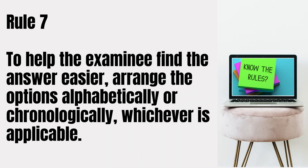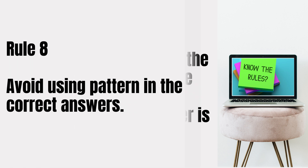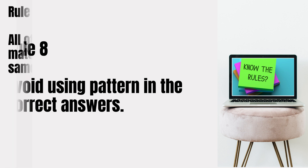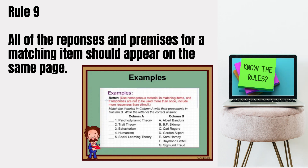Rule number seven: to help the examinee find the answer easier, arrange the options alphabetically or chronologically if in date or time, whichever is applicable. Rule number eight: avoid using a pattern in the correct answers. Rule number nine: all of the responses and premises for a matching item should appear on the same page to avoid confusion to your students.